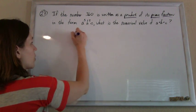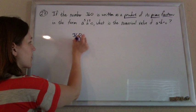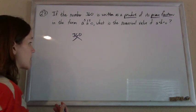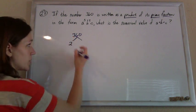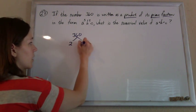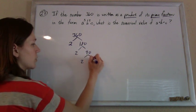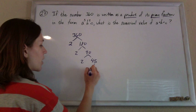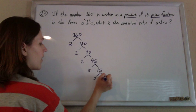We're going to write 360 as a product of its prime factors using a factor tree. There are a bunch of ways to do this. You can break it down however you like. I always like starting with 2 because I can tell that it's even. So 2 and 180, 2 and 90, 3 and 15, another 3 and 5.